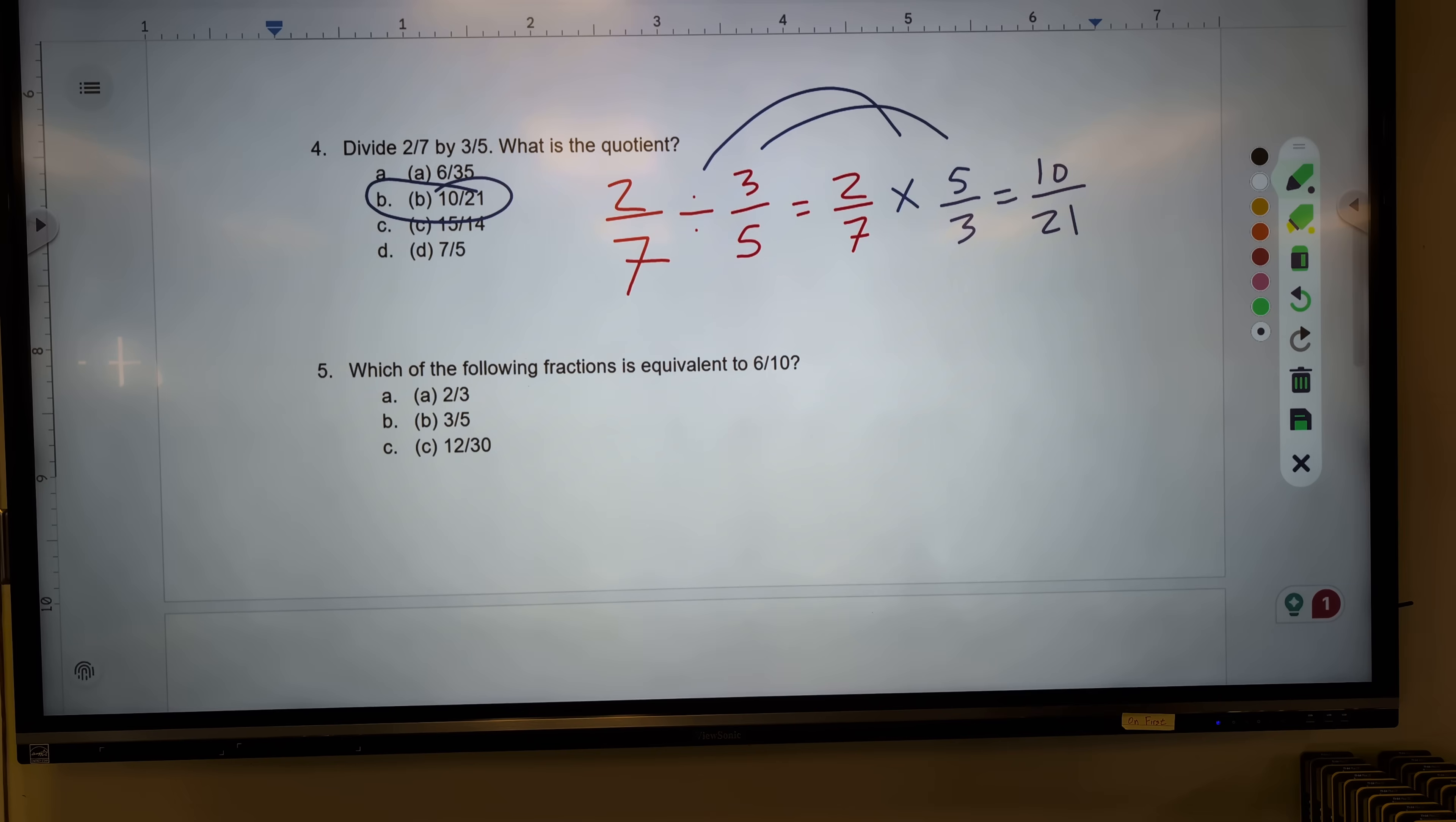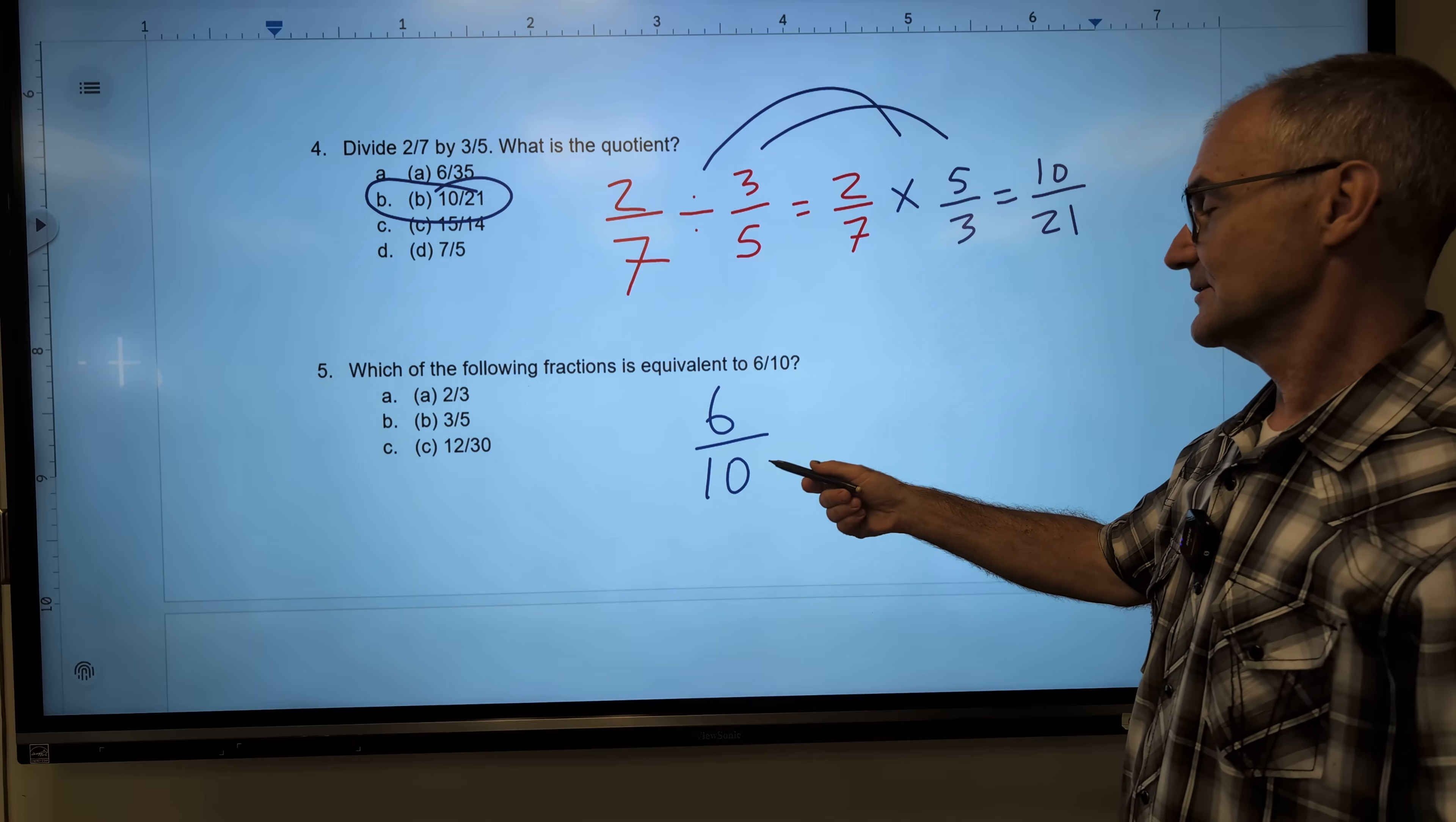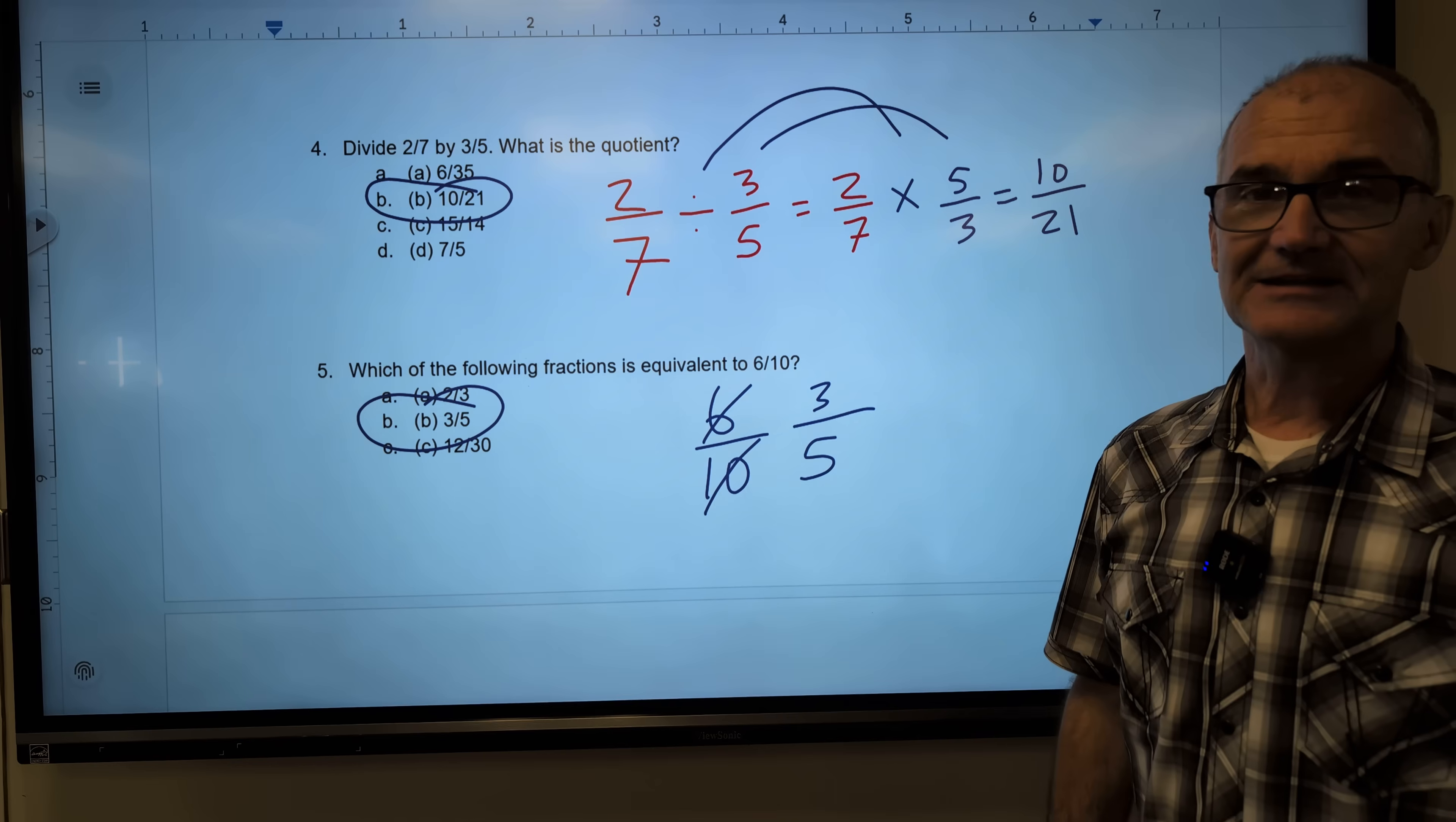Okay, last problem, number five here. Which of the following fractions is equivalent to six-tenths? Well, this is just a reduction problem. What number goes into here and into here? You don't have to get the biggest one, just any, and then you keep reducing down. Two will go into here three times. Two goes into here five times, giving me three-fifths. Correct answer, answer B right there.